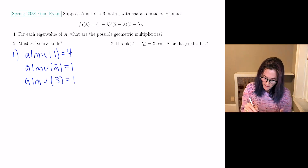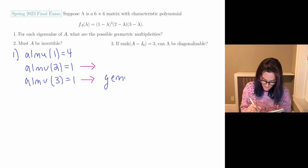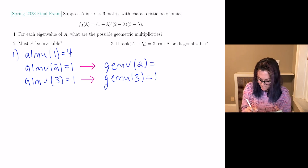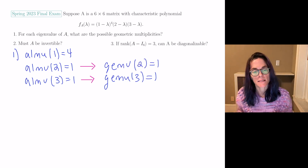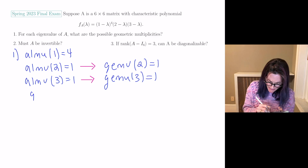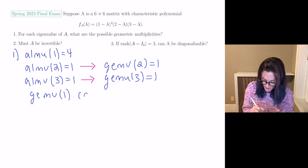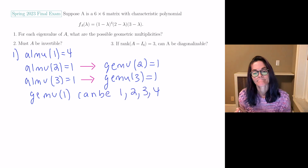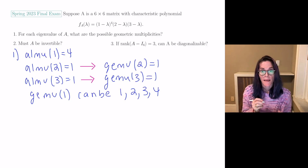For each eigenvalue of A, what are the possible geometric multiplicities? Immediately we know the geometric multiplicity of 3 is 1 and the geometric multiplicity of 2 is 1. But the geometric multiplicity of 1 can be 1, 2, 3, or 4.